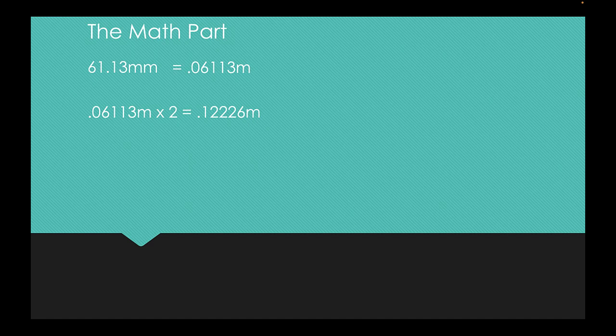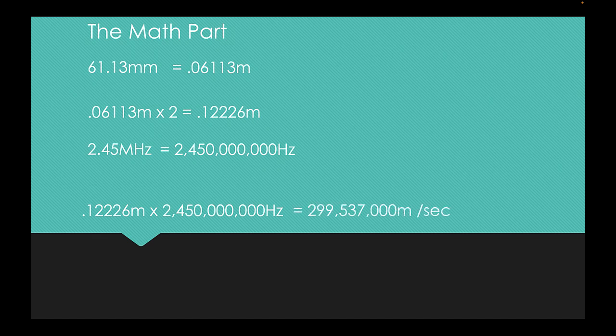Our next step is to take that and to take the frequency of the microwave and most home microwaves are 2.4 or 2.45 megahertz. I know mine is 2.45 megahertz. So we're going to convert this out to hertz. And 2.45 megahertz is 2,450,000 hertz. Now the next step is we're going to take the 0.12226 meters and multiply it by the hertz that we measured. So 0.12226 meters multiplied by 2,450,000 hertz equals 299,537,000 meters per second. That is our calculation that we've calculated.